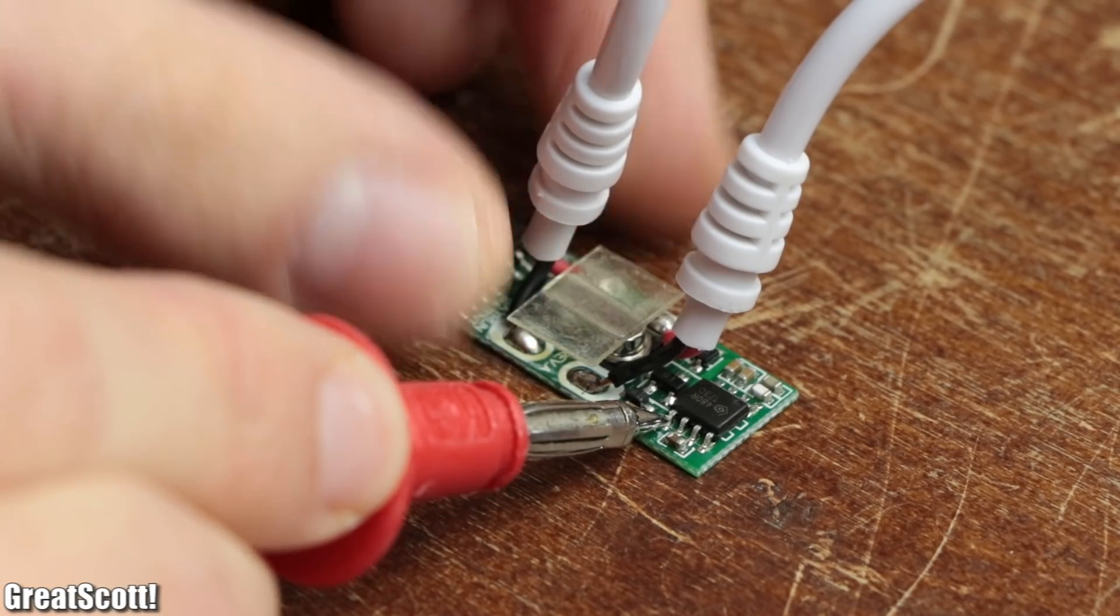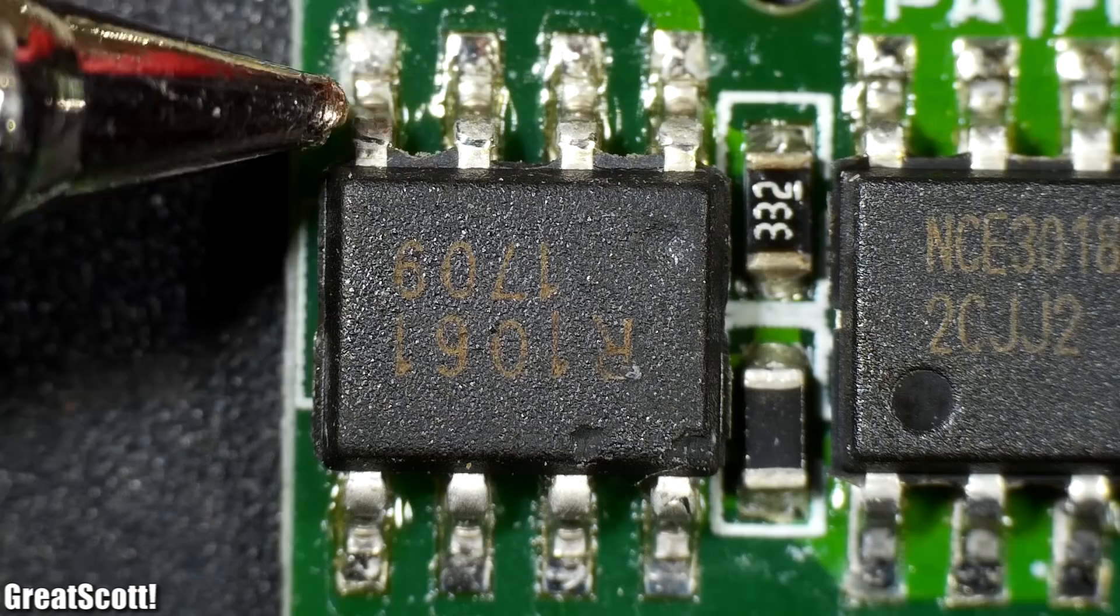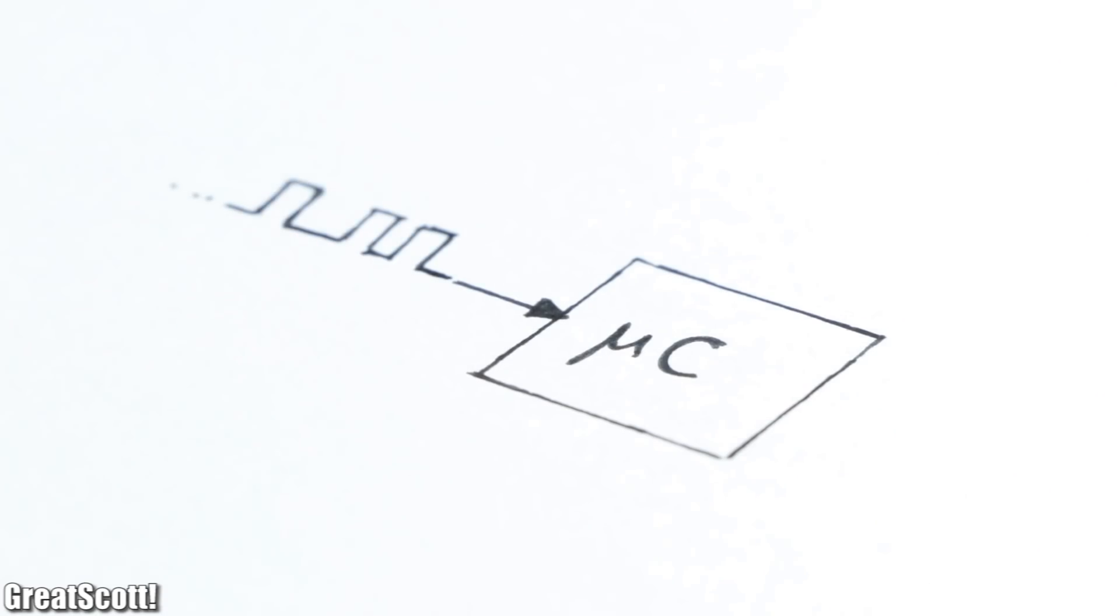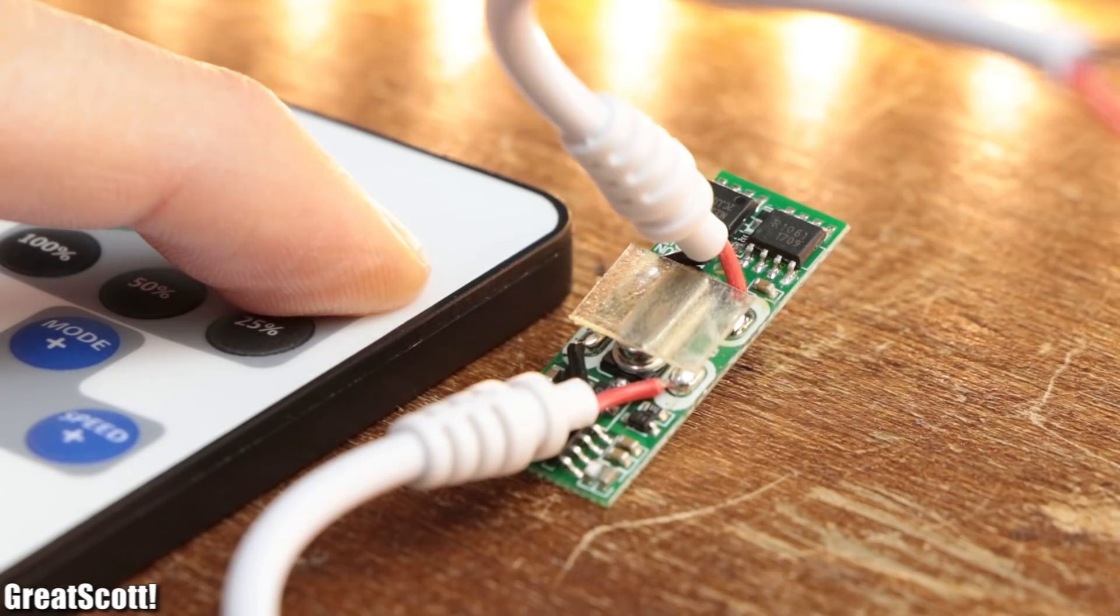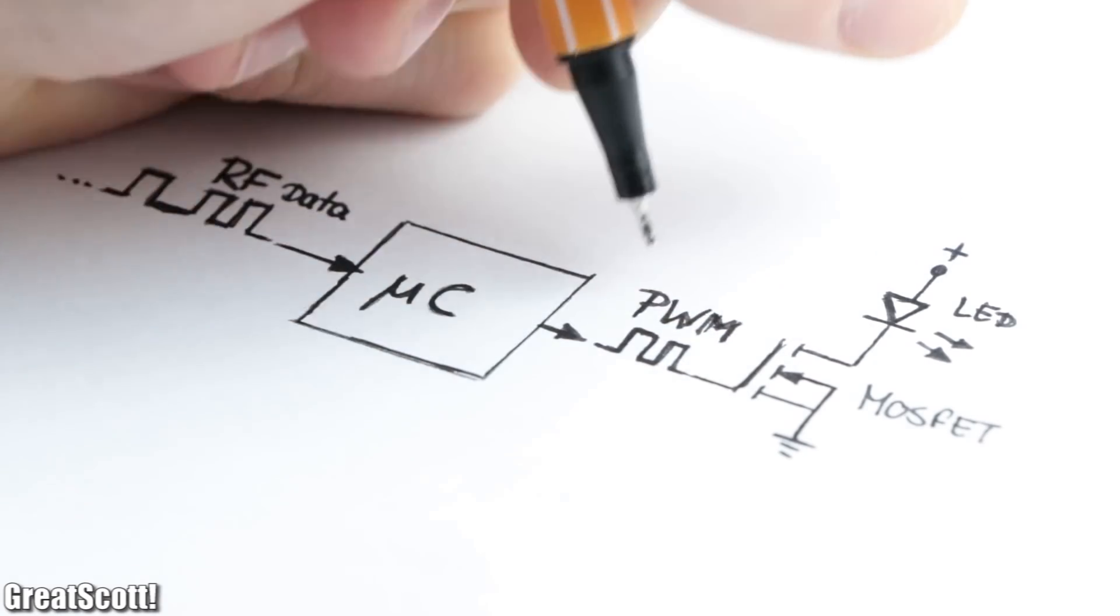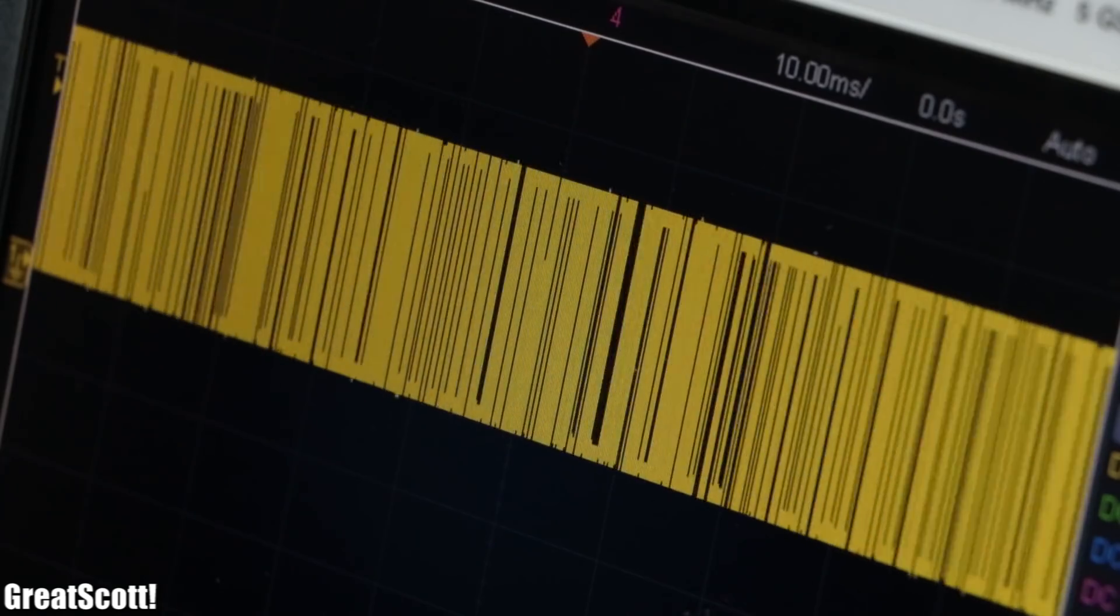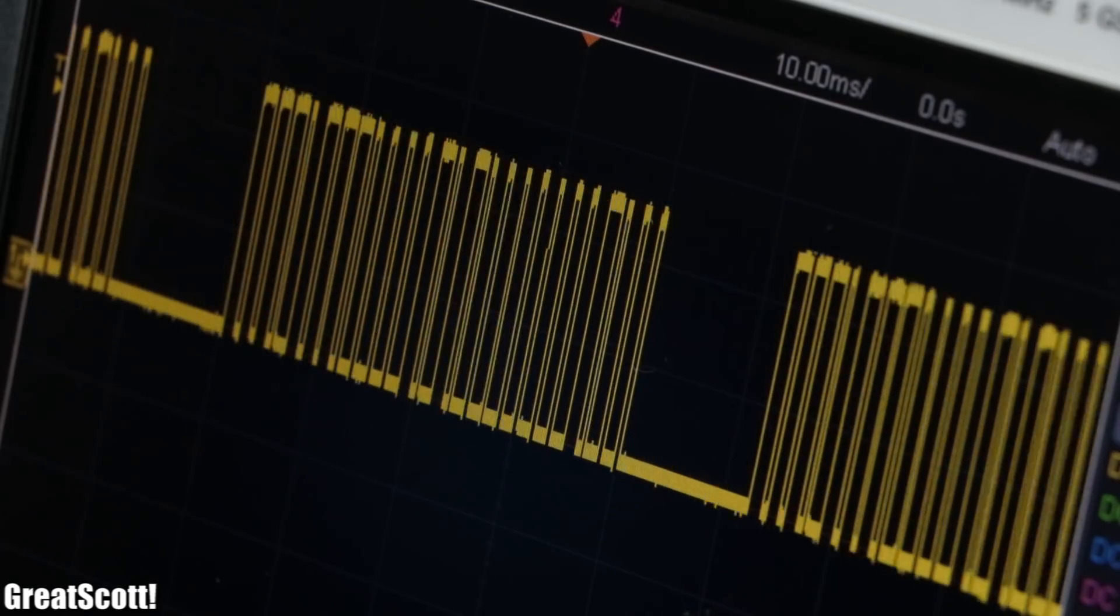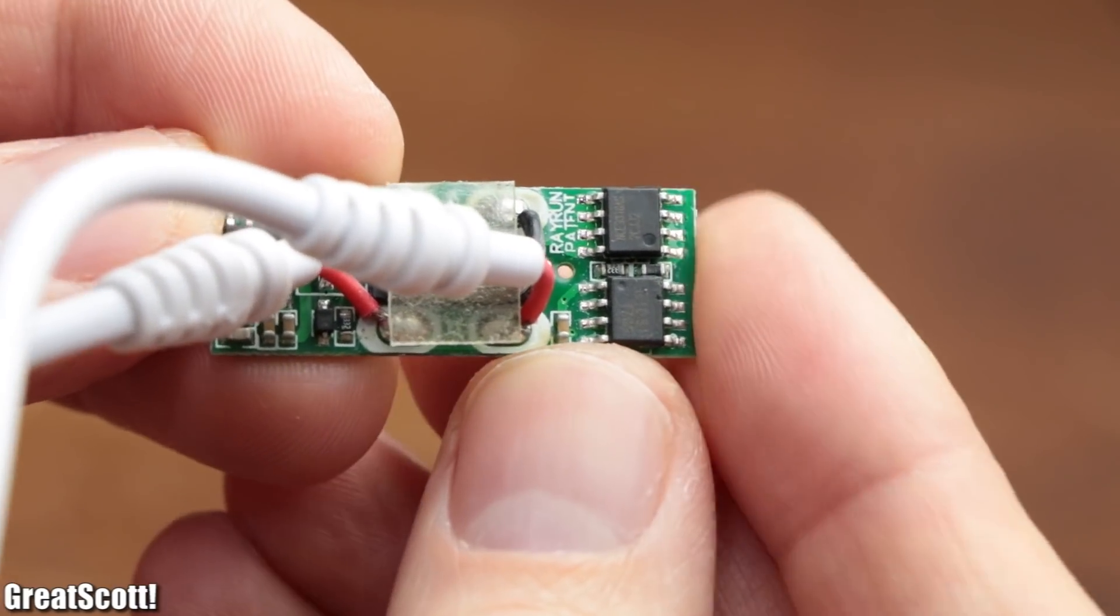By using the continuity function of my multimeter I found out that this data output directly connects to a microcontroller IC which will probably decode the data signal and then control a MOSFET which sits right next to it to adjust the brightness of the LEDs. And that is basically how this RF receiver works and yes it can also receive and demodulate the data signals from the RGBW LED strip RF remote. But I really do not need the microcontroller and MOSFET part of the PCB.